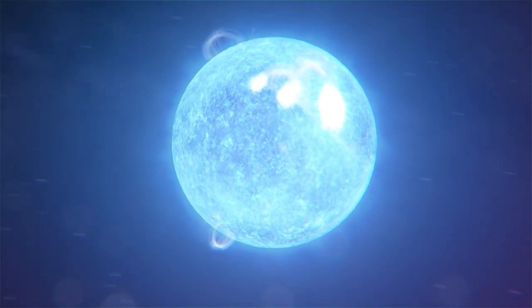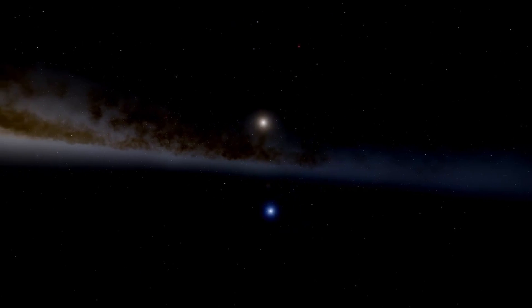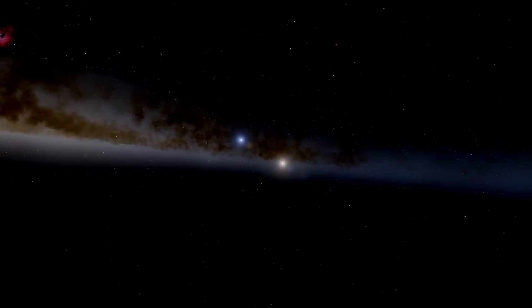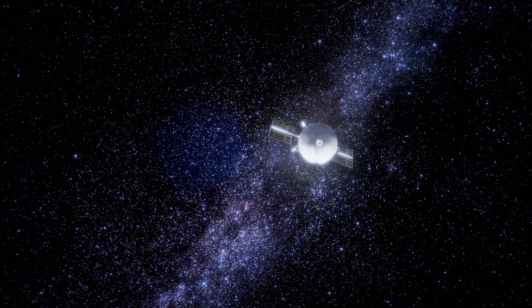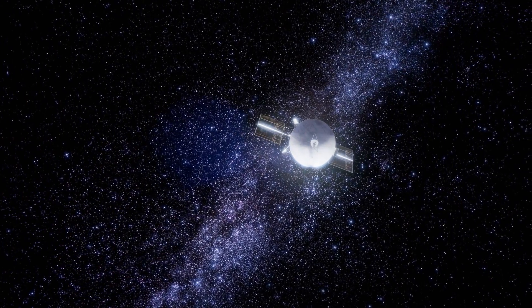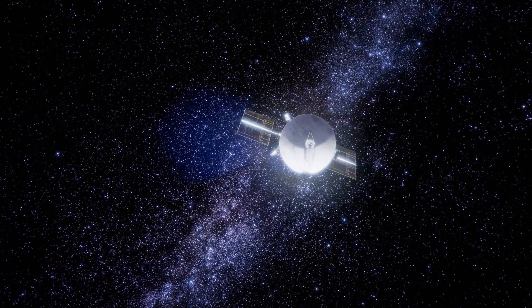Together with the Deep Space Climate Observatory, DISCOVER, and the Solar and Heliospheric Observatory, SOHO, IMAP will form part of a multi-mission network designed to track solar eruptions from their origin to their arrival at Earth. The goal is to provide comprehensive, real-time assessments of space weather conditions.